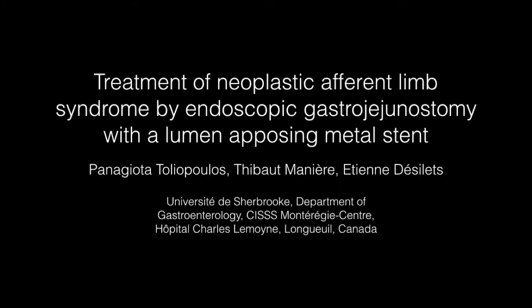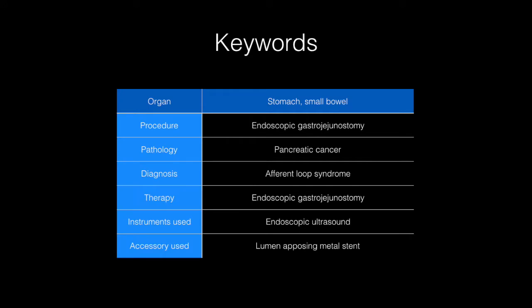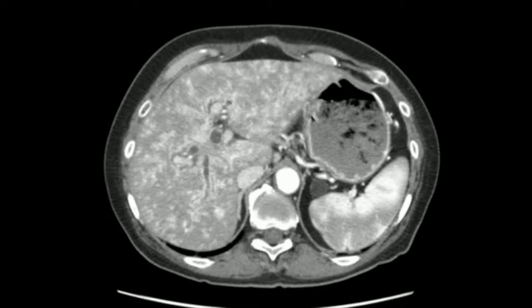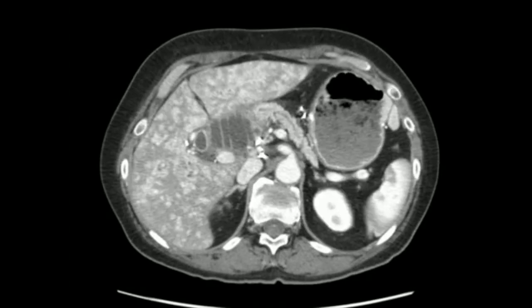Treatment of neoplastic afferent limb syndrome by endoscopic gastrojejunostomy with a lumen-apposing metal stent. We present a case of a 65-year-old woman who presented with cholangitis. She was known for pancreatic adenocarcinoma and had undergone a Whipple procedure in the past. The CAT scan showed an afferent limb syndrome due to tumor recurrence.